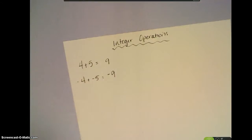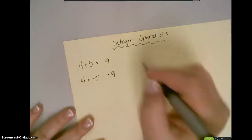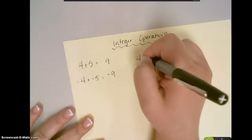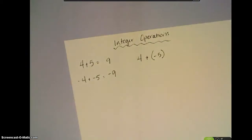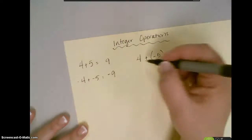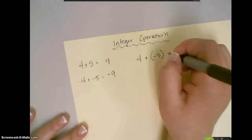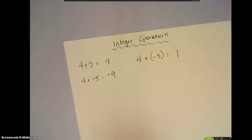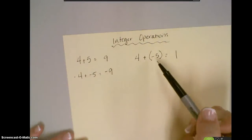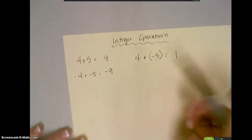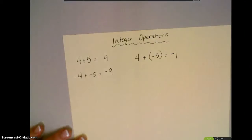If they are different integers — so if I have positive 4 plus a negative 5 — what we're going to do is we are actually going to subtract the numbers. So, 5 minus 4 is 1, and then for my sign, I'm going to use the sign of the number that has the bigger absolute value, which in this case would be negative 5 because the absolute value would be 5. So, I'm going to use the negative sign.